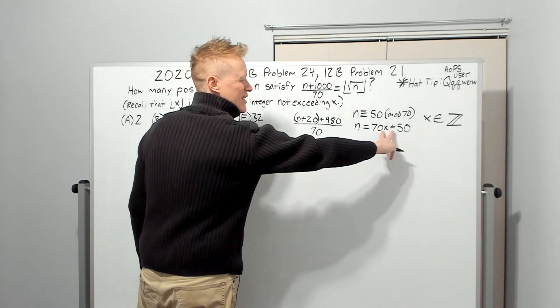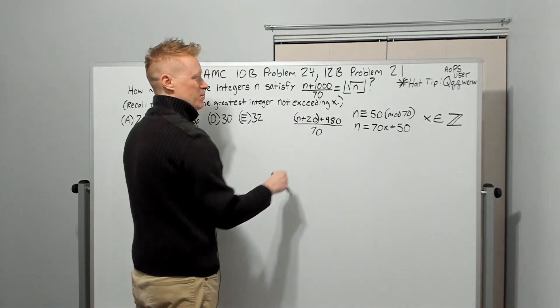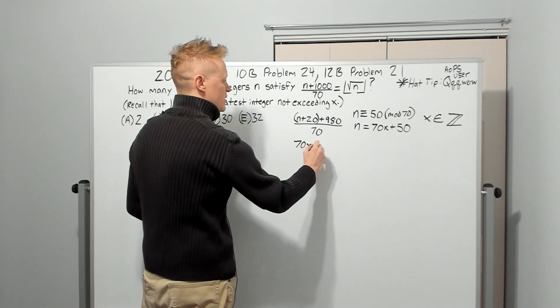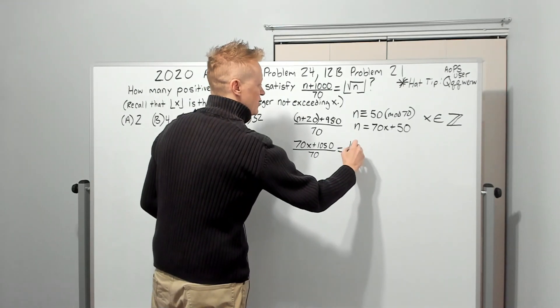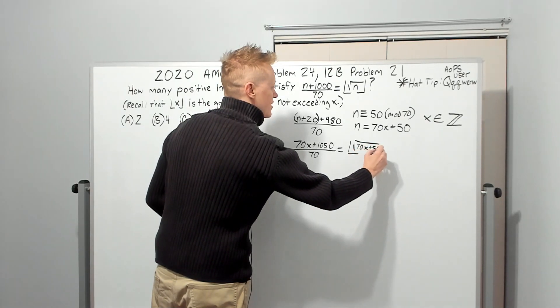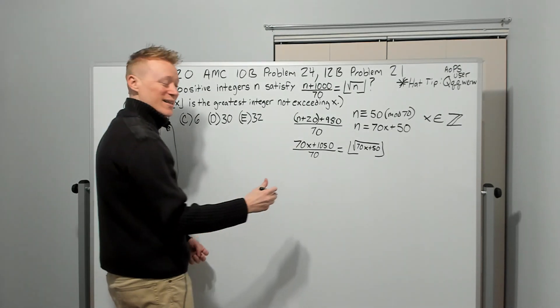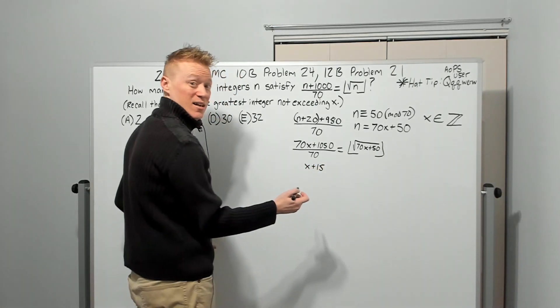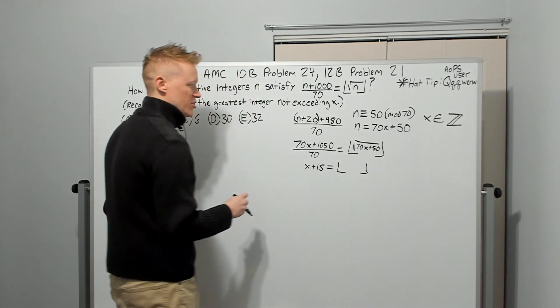So then let's go ahead and take this expression that we found, which is a new piece of information that we've generated and plug it back into the expression at hand. It will now say (70X + 1050)/70 is equal to the greatest integer less than or equal to the square root of 70X + 50. Great. Okay. Well, this divides into that now, which is why we did it. And so we're going to get X + 15 because seven times 15 is 105. Correct. And this will be equal to that greatest integer expression.